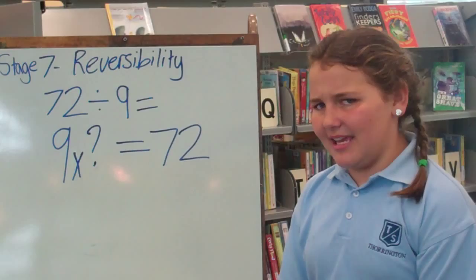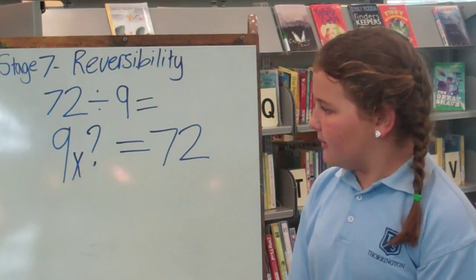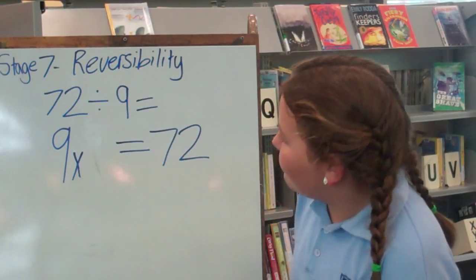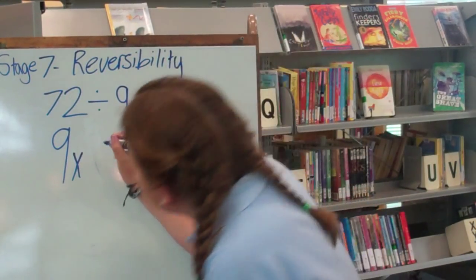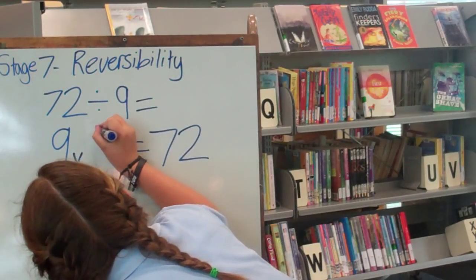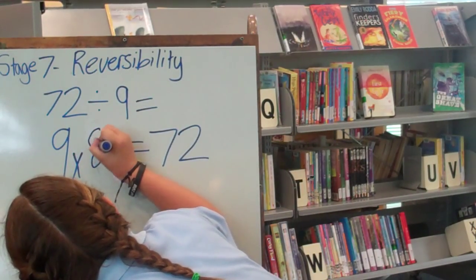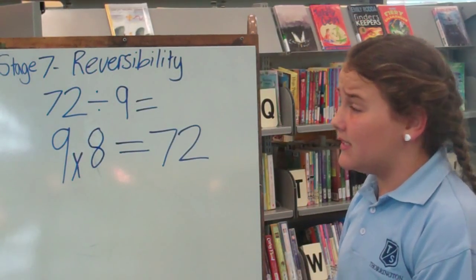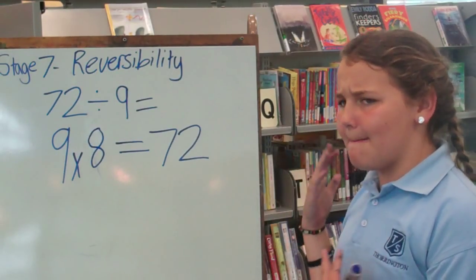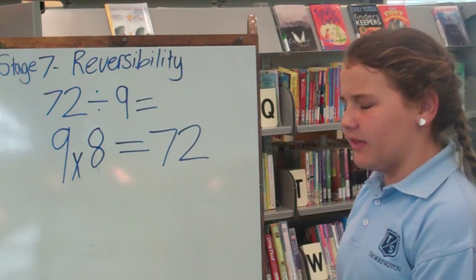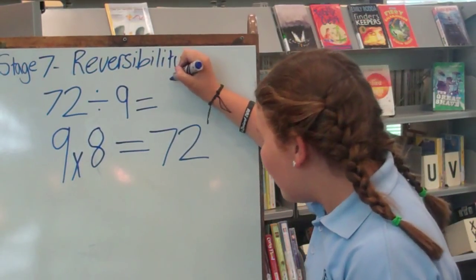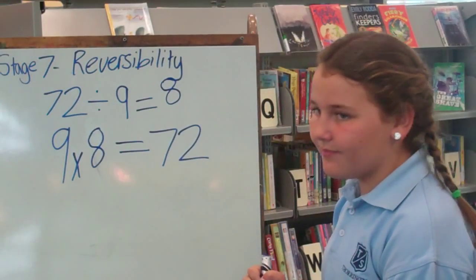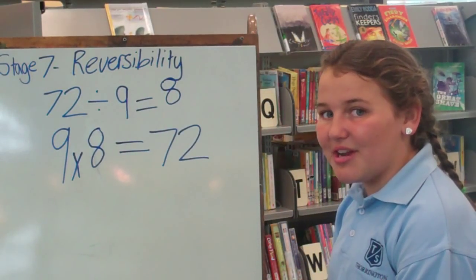9 times 8 is 72, isn't it? So we're going to replace the question mark with an 8. 9 times 8 equals 72, so that must mean that 72 divided by 9 equals 8. That's your answer.